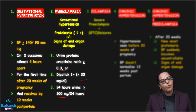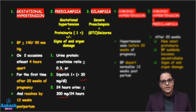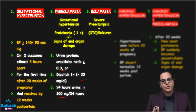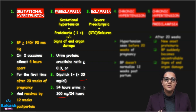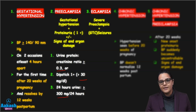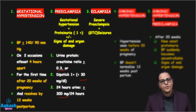Third is eclampsia. Eclampsia is presence of all the features of severe preeclampsia plus now the patient will also present with generalized tonic-clonic seizures. So all three conditions — gestational hypertension, preeclampsia, and eclampsia — are presenting after 20 weeks of pregnancy and resolving before 12 weeks postpartum.